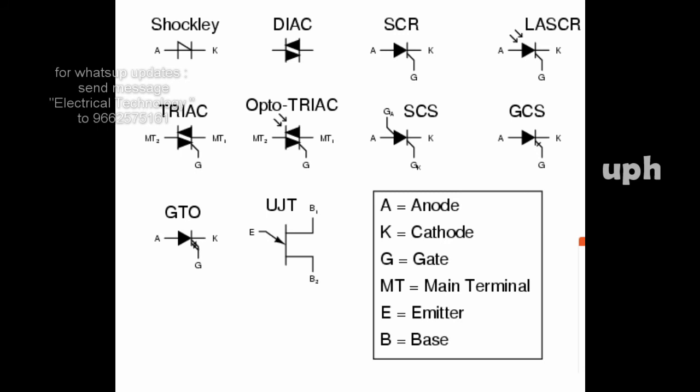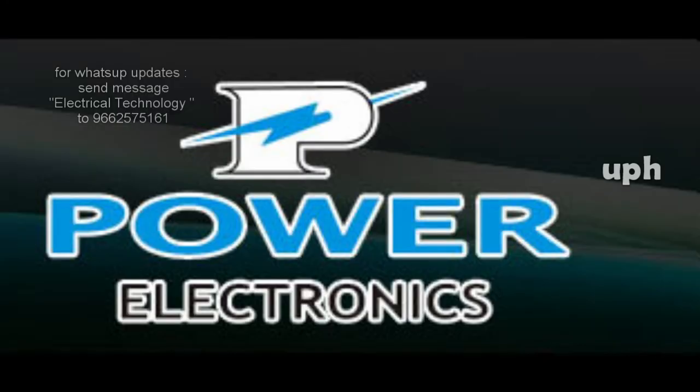Thyristors are bi-stable switches. They can operate in both non-conducting and conducting states. Some thyristors lack gate-controlled turn-off capability. For those thyristors, only when the anode current falls below the holding current do they transition from the conducting state to the non-conducting state.